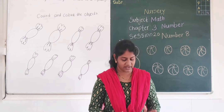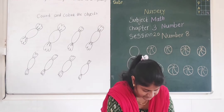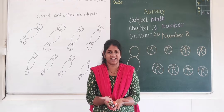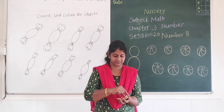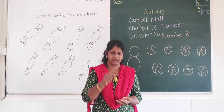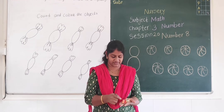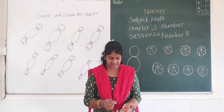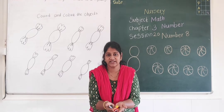I have brought some objects, now I am going to count them. These are chocolates. Now I am going to count: 1, 2, 3, 4, 5, 6, 7, 8. How many chocolates are here? Yes, 8 chocolates are here.